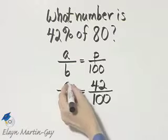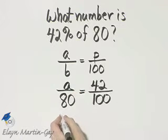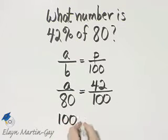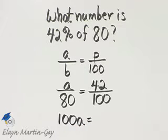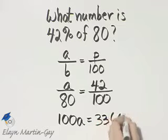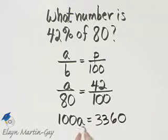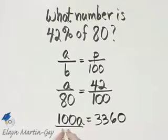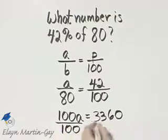And let's solve by cross products. A times 100, that is 100A, is equal to 42 times 80. That will be 3,360. And then I'll solve for A by dividing both sides by the coefficient of A, which is 100.